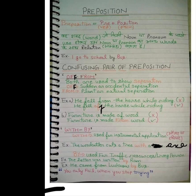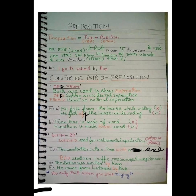Next pair: 'with' and 'by.' 'With' is used for instrumental application — when we work with an instrument. Like: the woodcutter cuts a tree with an axe. 'By' is used for transport, resources, or a living person. Like: the letter was written by Ram. He came from Lucknow by bus.